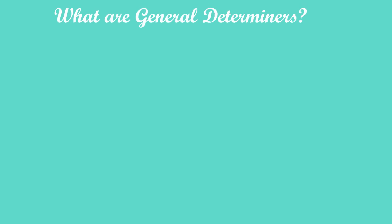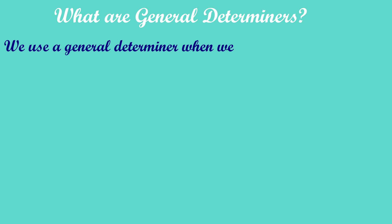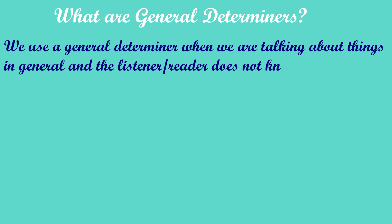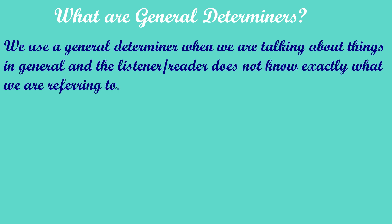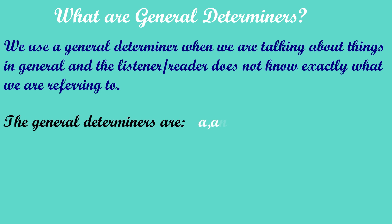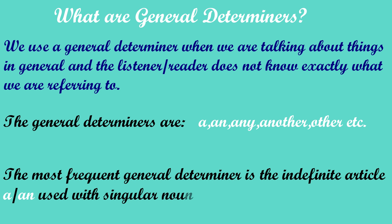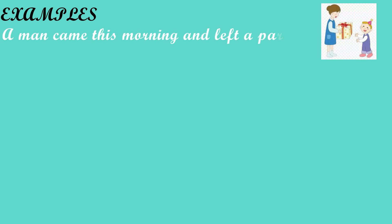Now let's look at general determiners. We use a general determiner when we are talking about things in a general way, and the listener or reader does not know exactly what we are referring to. The general determiners are a, an, any, another, other, etc. The most frequent general determiner is the indefinite article a and an, used with singular nouns. For example, a man came this morning and left a parcel — there is only one person and one parcel, so we use a with singular nouns.